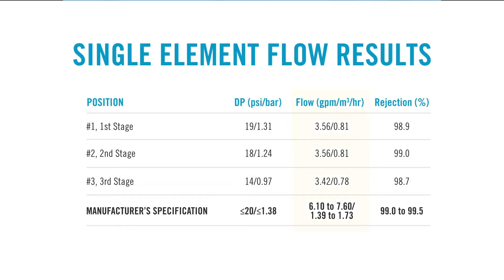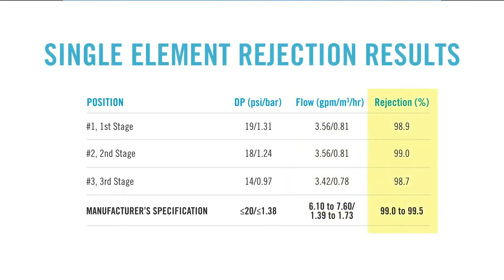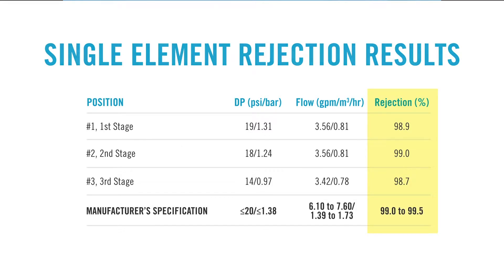We'll also take a look at their flow. The flows were fairly consistent for the first three elements in their system with about half of their original performance. Another thing we'll look at is the rejection — the rejections are similar but slightly below normal. So let's take a look at the first element from the first stage. We see the delta pressure is 19, the flow is 3.56 GPM, and the rejection is 98.9%.